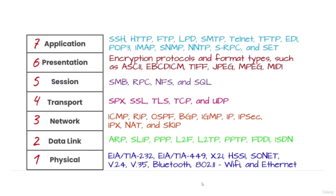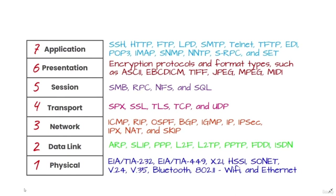A multitude of protocols exist at the TCP/IP application layer, which combines the session, presentation, and application layers of the OSI model. The OSI model, or Open Systems Interconnection Model, is a conceptual framework used to describe the functions of a networking system. It characterizes computing functions into a universal set of rules and requirements to support interoperability between different products and software. Communications between a computer system are split into seven abstraction layers: the physical layer, data link layer, network layer, transport layer, session layer, presentation layer, and application layer. The OSI model was published in 1984 by the ISO and is still used today to describe network architecture.